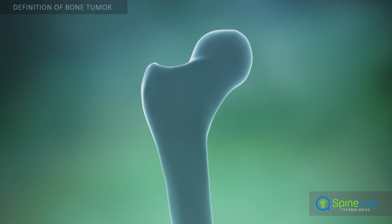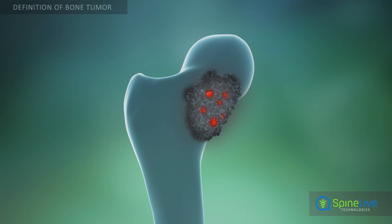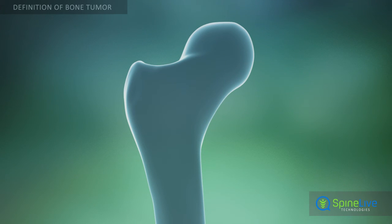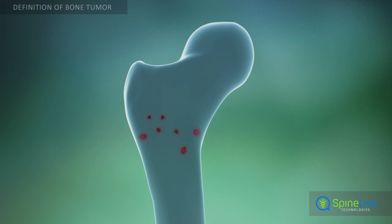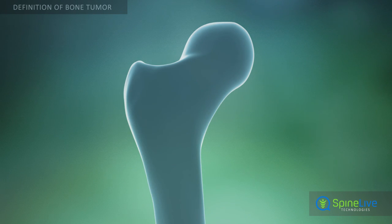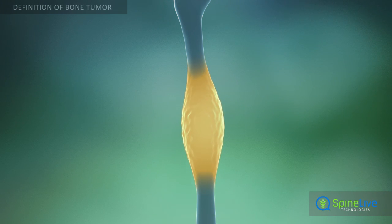Therefore, most of the tumors that grow from the epiphysis are cartilage-based. The most common of these tumors are chondromas. The most common cancer in the epiphysis of long bones is chondrosarcoma. The most common metaphyseal bone tumors are osteomas. Usually bone cancers here have a metastatic origin; the most common primary bone cancer of the metaphysis is osteosarcoma. Since the diaphysis is composed of dense bone tissue and has few bone cells, it is rarely affected by primary bone tumors. The most common tumor of this area is osteoma.